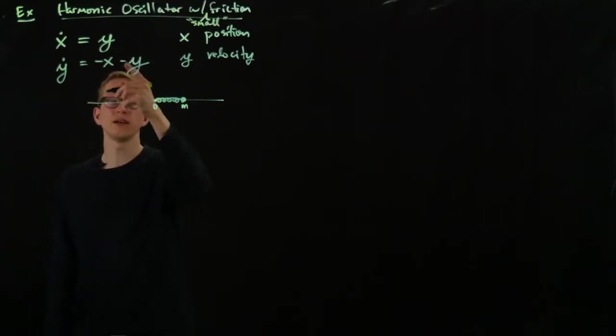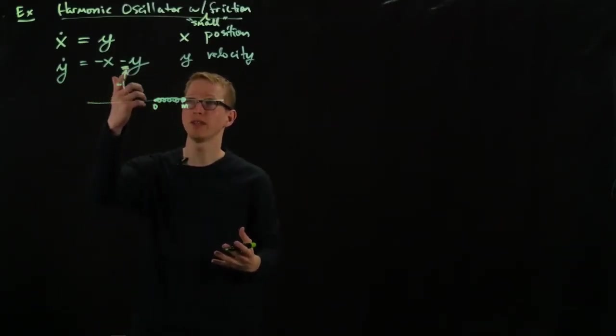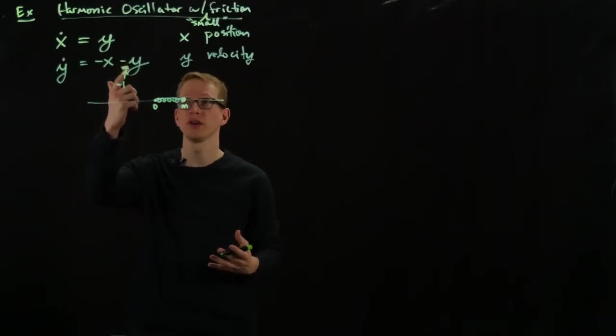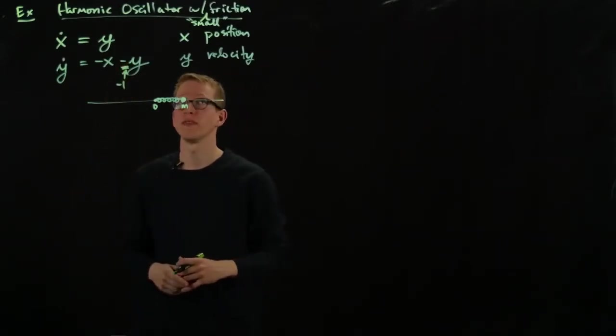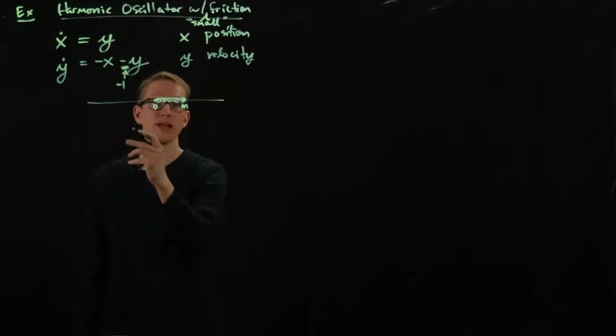And when this number here is, so here we have a negative 1. And this negative 1 is related to what I mean by small friction. If instead I had a coefficient of at least 2, then this would be a lot of friction. And the actual motion will actually be different.